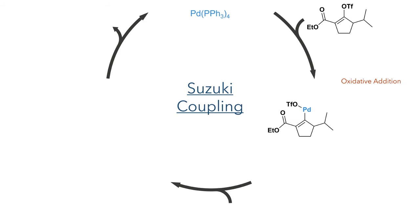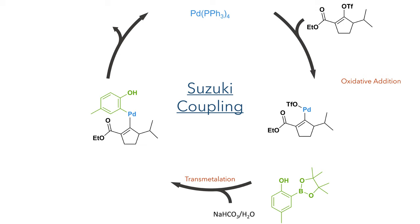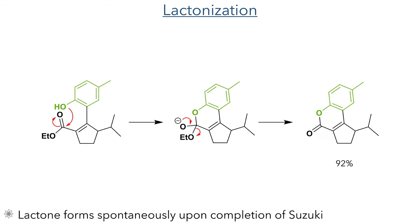With both coupling partners now constructed, the authors carried out a Suzuki coupling using tetrakis(triphenylphosphine)palladium. This first undergoes an oxidative addition into the carbon-triflate bond. This palladium species then undergoes transmetallation promoted by base, leaving both coupling partners bound to the palladium after elimination of the triflate and borane groups. This palladium species undergoes a reductive elimination to couple these groups together, forming a new carbon-carbon bond. Upon completion of this coupling, the molecule underwent a spontaneous lactonisation with the attack of the aromatic hydroxyl group into the ester to form the cyclic lactone in a 92% yield.